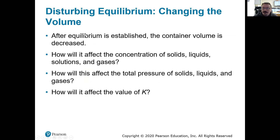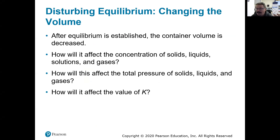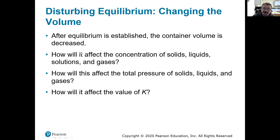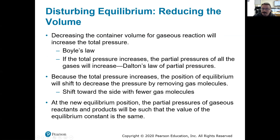So changing the volume. Once we have equilibrium established, what happens if we decrease the volume? In our container we have some amount of gas and we have a pressure, and that pressure comes from the gas colliding with the walls of that container. If we decrease the volume, we're going to get more collisions and an increase in pressure. When the total pressure increases, equilibrium is going to shift towards either the reactants or the products so that we get fewer gas molecules.